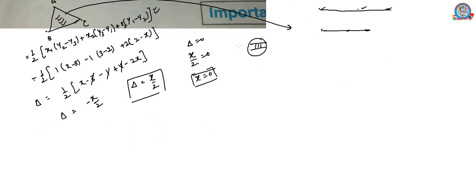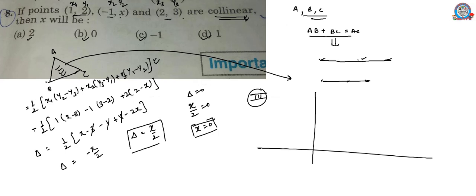We can use similarity or trigonometry to solve this problem also. So we draw a graph. First point is (1,2), let's say this point is (1,2). Second is (-1,x), so minus 1 obviously lies left hand side of this point. So let's say this point is (-1,x). Then (2,3) obviously lies right to this point, so here we can assume (2,3).